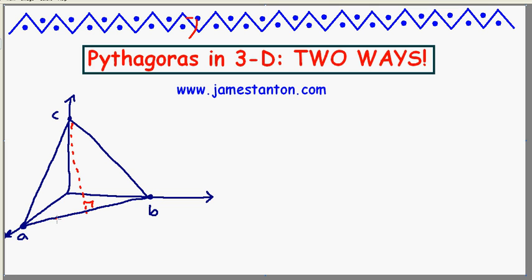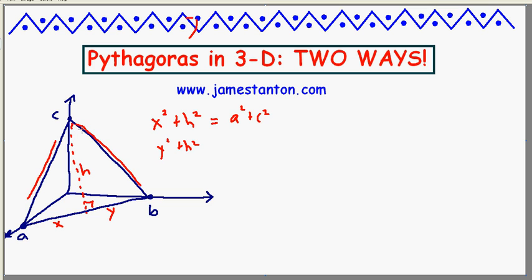Let's work out the area of the sloping triangle sitting in the corner of the room. I'm going to need its height h and its base. This height h splits the base into two pieces, x and y. I see a little right triangle: x inches, h inches, and a third side. By ordinary Pythagoras, x squared plus h squared equals that third side squared, which is a squared plus c squared. That's one equation. Similarly, y squared plus h squared equals b squared plus c squared. And thirdly, the length x plus y is, by Pythagoras, the square root of a squared plus b squared. That's three applications of ordinary Pythagoras in two dimensions, all done in different planes.